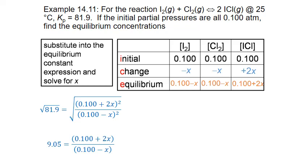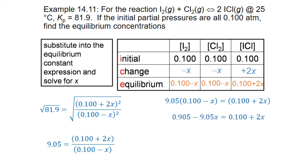We multiply both sides by 0.100 minus X to remove it from the denominator, giving 9.05 times that term on the left. Distributing 9.05 gives 0.905 minus 9.05X, still equal to 0.100 plus 2X on the right. Rearranging to collect X terms gives 0.805 equals 11.05X, and dividing by 11.05 gives X equals 0.0729.